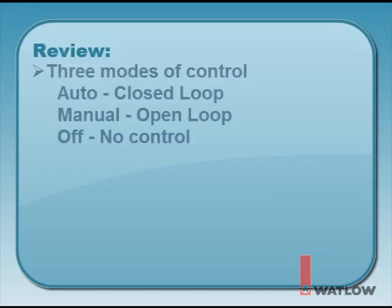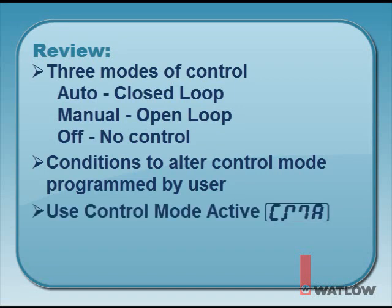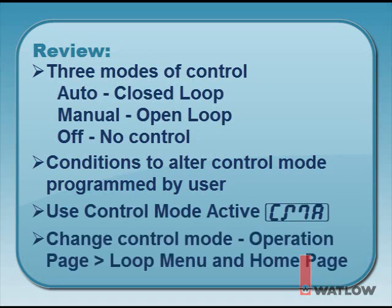Let's review what we've covered. There are three modes of control: auto, called closed loop control; manual, called open loop control; and off. There are conditions other than the user's request that can alter the control mode, and the user programs when these conditions will occur. Use the parameter control mode active to determine which control mode is in effect. We demonstrated how to view and change the control mode in the operations page loop menu and at the home page.